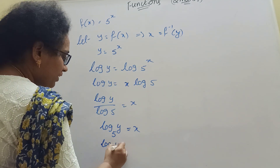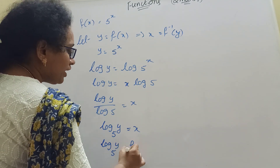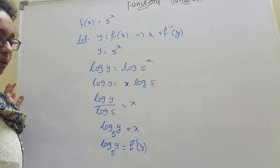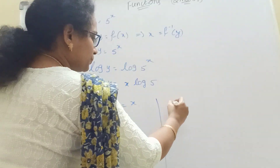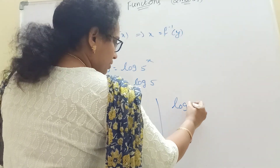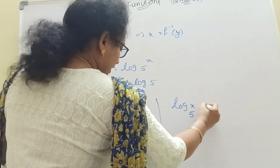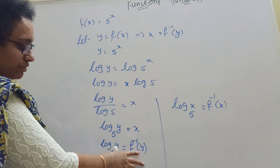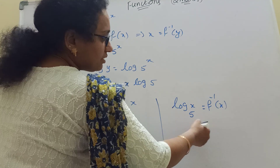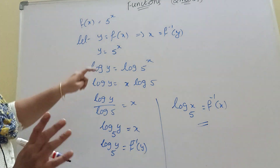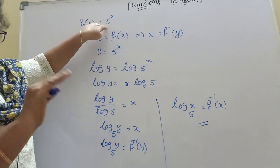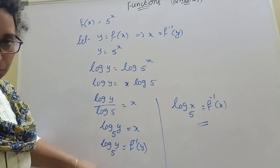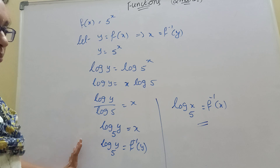Log base 5 of y equal to x — that is f inverse of y. Okay, while we have to do it, x is equal to y, similar to y. Log x to the base of 5 — y is equal to x. This is the answer. 5 to the power x is the function, so log base 5 applied to y is the inverse. This is a very important model.